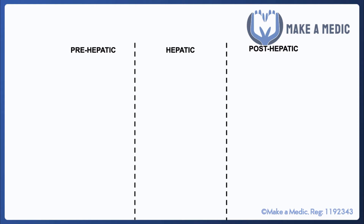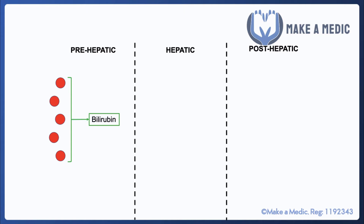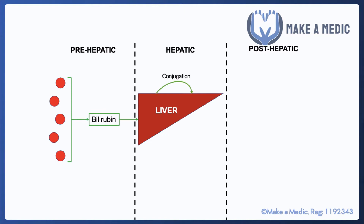Before we go any further, let's think about exactly what happens to bilirubin in terms of it being generated, metabolized, and eventually excreted. The breakdown of red blood cells gives rise to bilirubin, which then travels to the liver where it gets conjugated — put together with glucuronic acid by the action of an enzyme — resulting in the production of conjugated bilirubin, which is soluble.